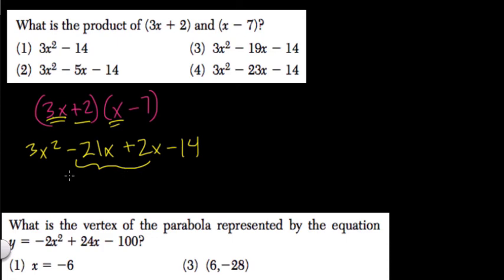Simplify these two. What's negative 21 plus 2? That's negative 19x. So we have 3x squared minus 19x minus 14. That's choice 3.